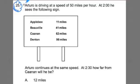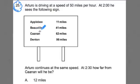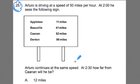Number 25. Arturo is driving at a speed of 50 miles per hour. At 2, he sees the following sign. We have some options here: Appleby, 11 miles away; Canaan, 62 miles away, and a whole bunch of other towns. Then it says Arturo continues at the same speed — he's driving at 50 miles per hour. At 2:30, how far from Canaan will he be? And then we have some answer options.